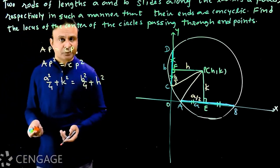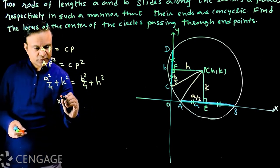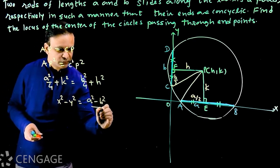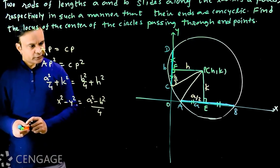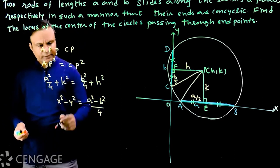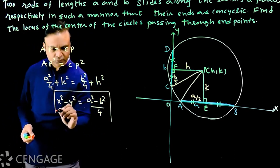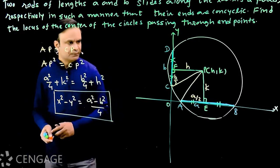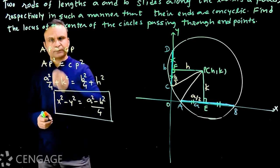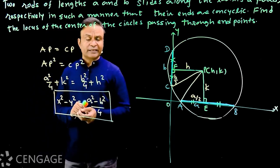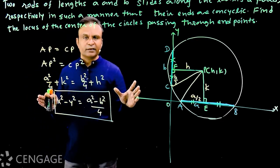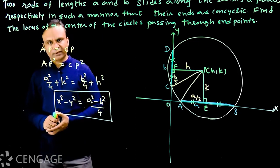Setting AP² = CP² gives a²/4 + k² = b²/4 + h². Now replacing h by x and k by y, we get the locus: x² − y² = (a² − b²)/4. This is the equation of a hyperbola — in fact, this is a rectangular hyperbola. This is the locus of the center of the variable circles. The main concept here is the application of properties of circles studied in 9th and 10th grade, applied in the form of coordinate geometry.